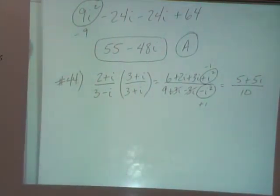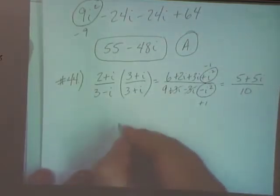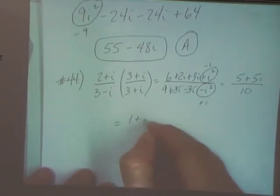And since all three numbers are divisible by the same thing, I'm going to go ahead and do that. Divide everything by five. So that'll leave me one plus I over two.